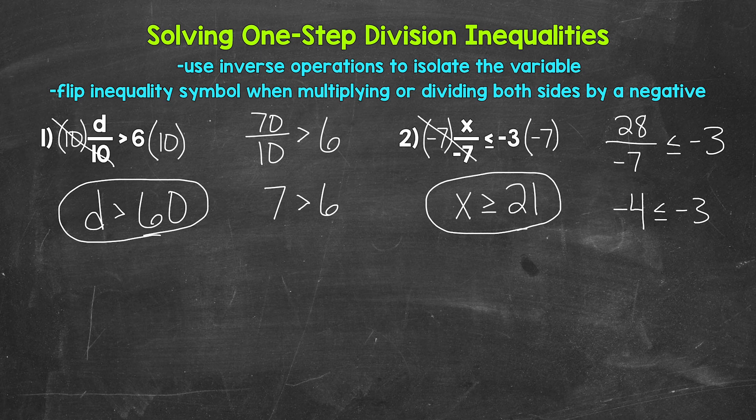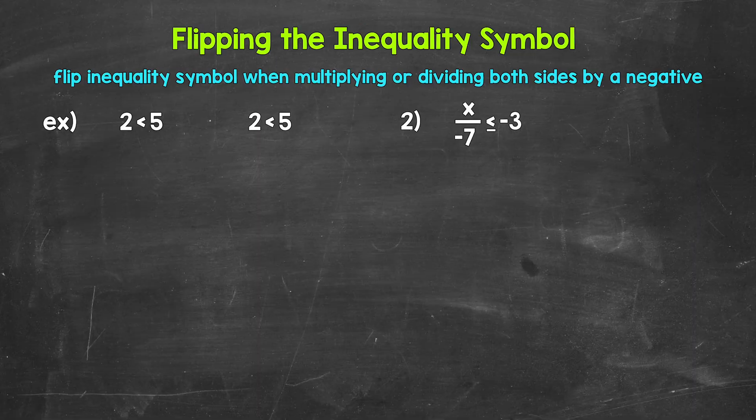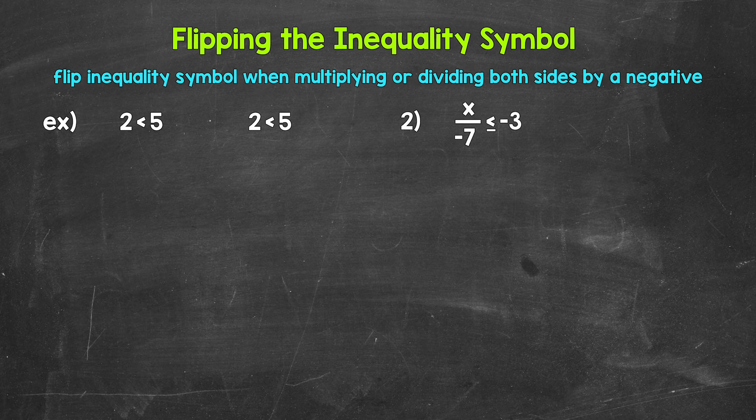Now before we end, let's take a look at flipping the inequality symbol and why this happens when we multiply or divide both sides by a negative. Let's start with the example: 2 is less than 5. Is this inequality true? Of course, 2 is less than 5. But let's see what happens when we multiply both sides by positive 2.